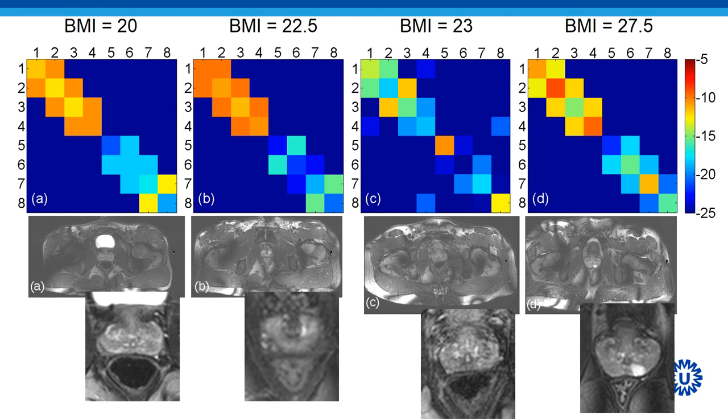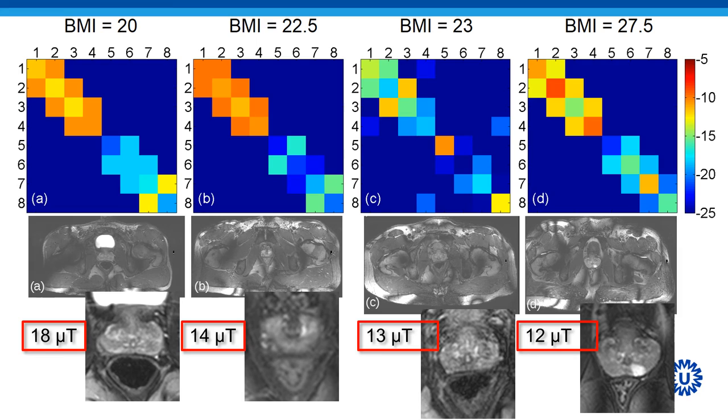If you look at the image quality, it's not that superior because the fat suppression pulse didn't work correctly. But if you look at the B1 plus values, you can see that we were able to reach 12 microtesla for subjects with a BMI of 27.5, up to 18 microtesla for subjects with a BMI of only 20.